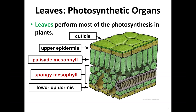In the spongy mesophyll, there are spaces in between each of the cells. Those spaces are for gases being produced as byproducts when we undergo photosynthesis, and they're also for storage of oxygen and CO₂. Gases are stored there and can be taken into the cells when needed, or released from the cells and stored there to then be released from the leaf itself.